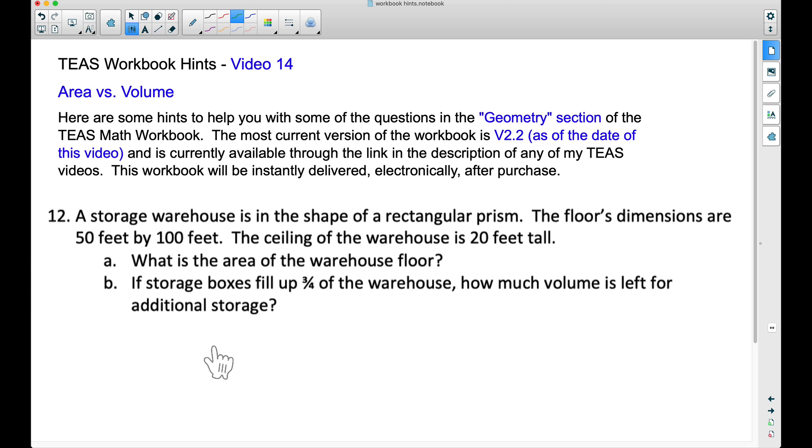No tricks here. We do have a rectangular prism, which is just really a rectangular box, but this is a huge box. We have a storage warehouse, and it does say that the floor's dimensions are 50 feet by 100 feet. So to find the area, we're going to take the length times the width, these two floor dimensions. So we have 50 feet times 100 feet, and this will give us a total of 5,000 square feet.